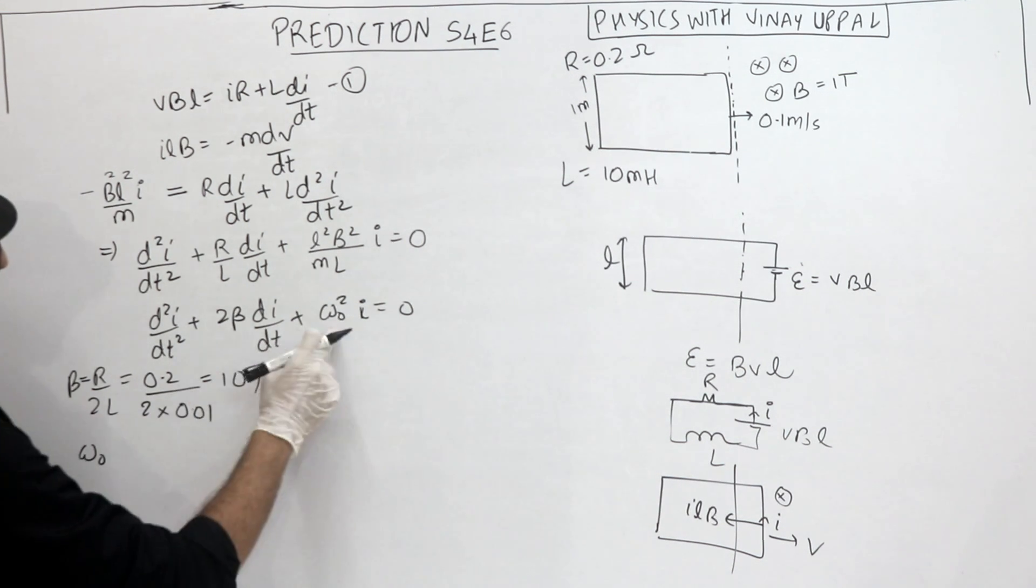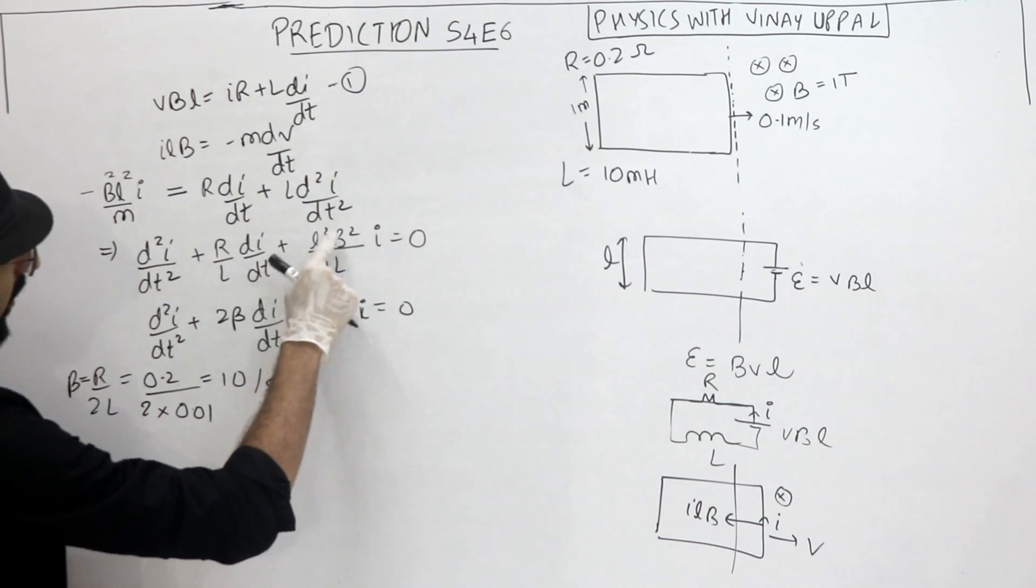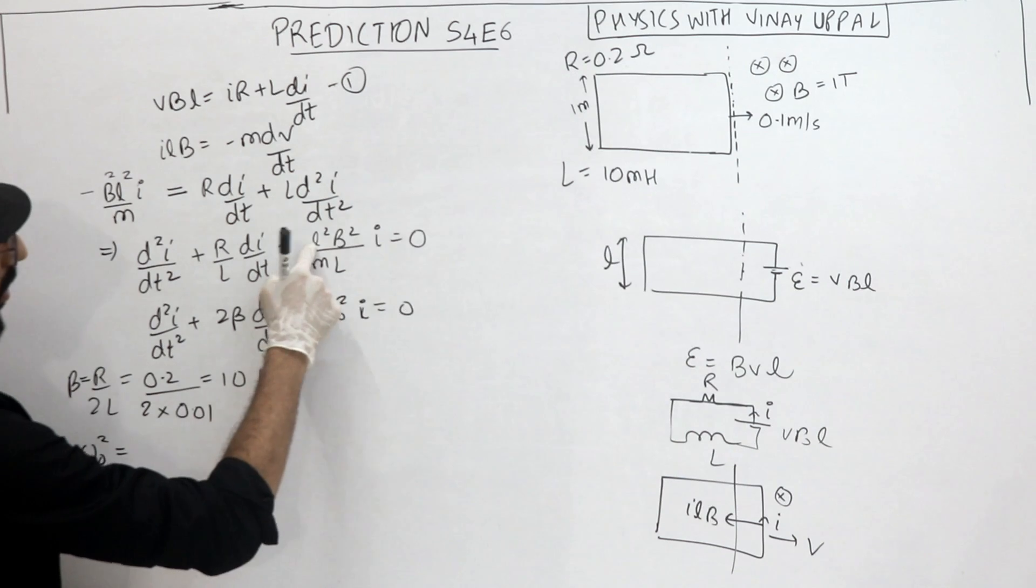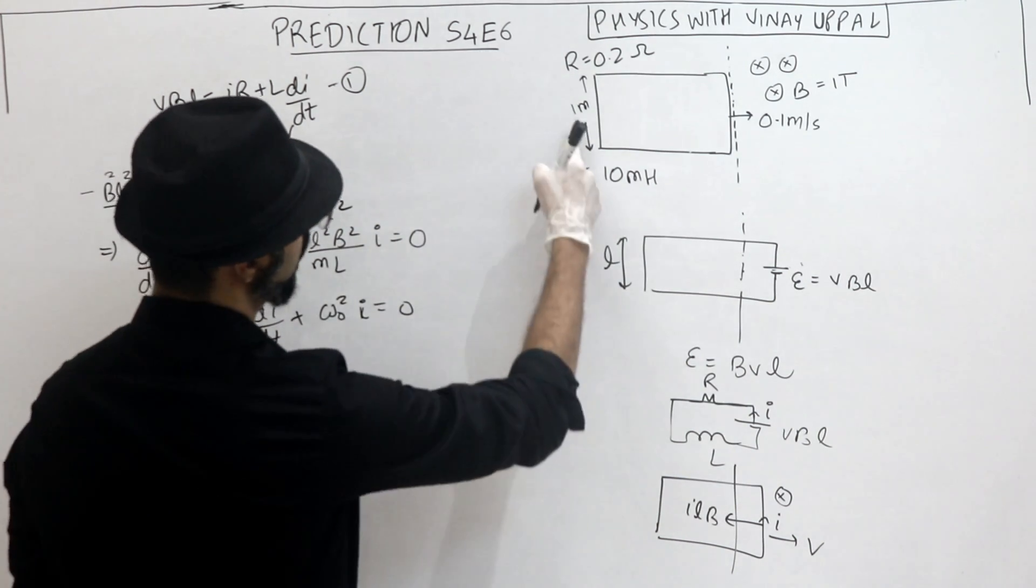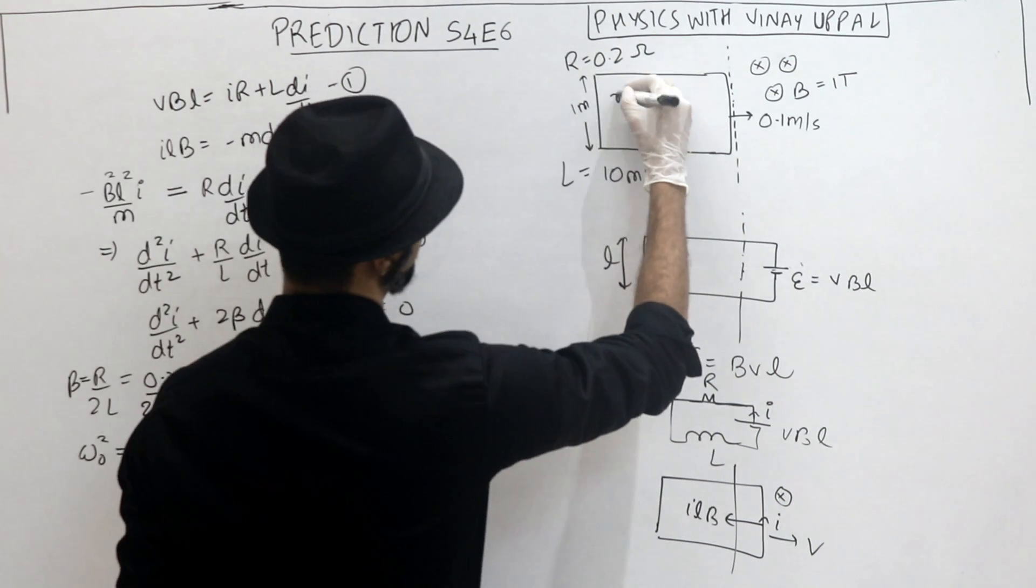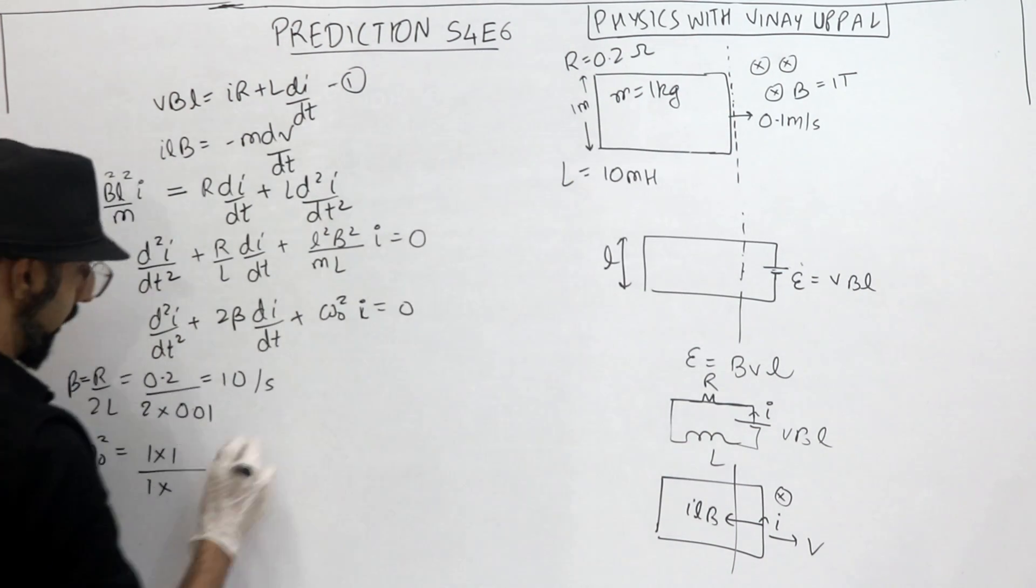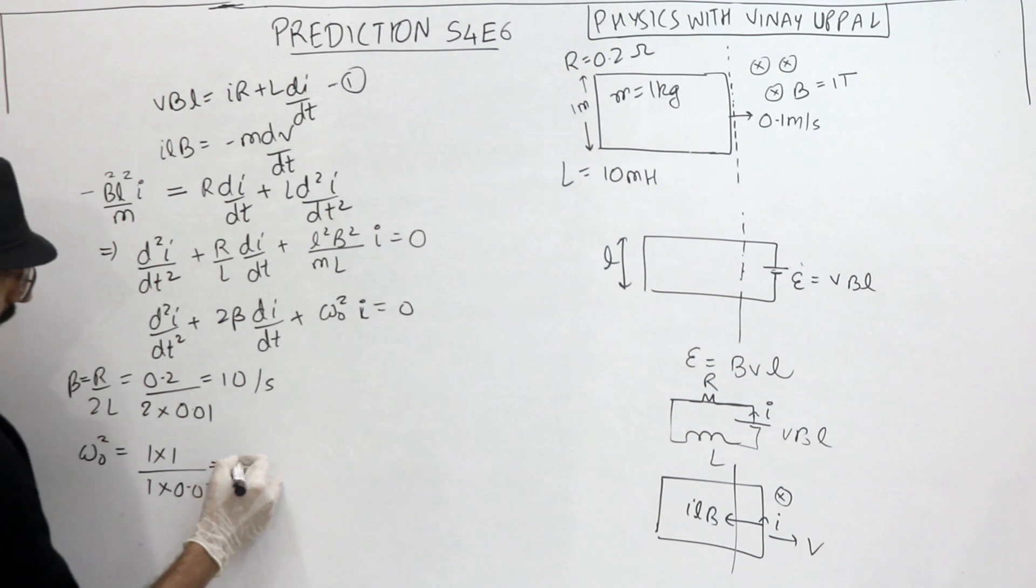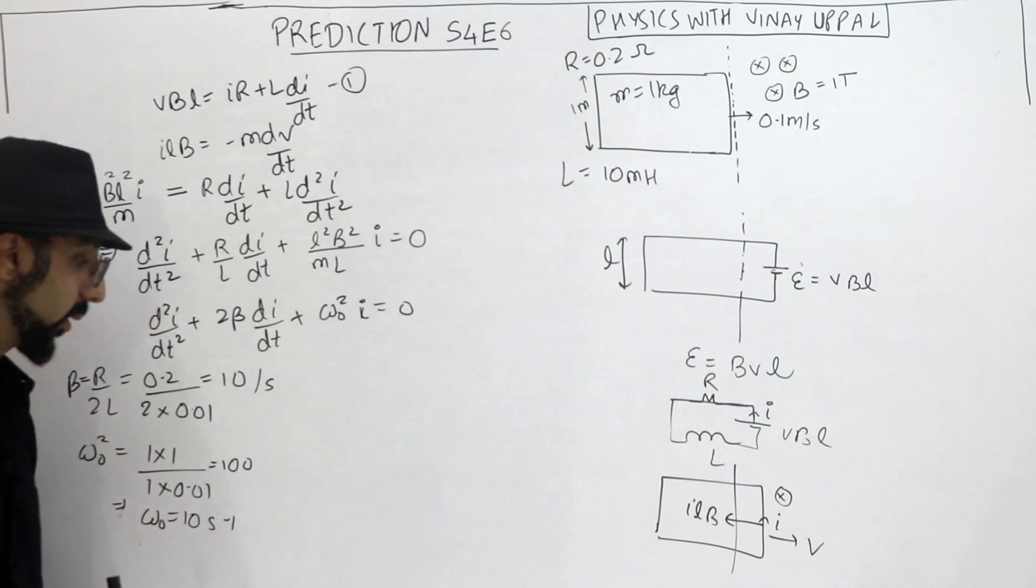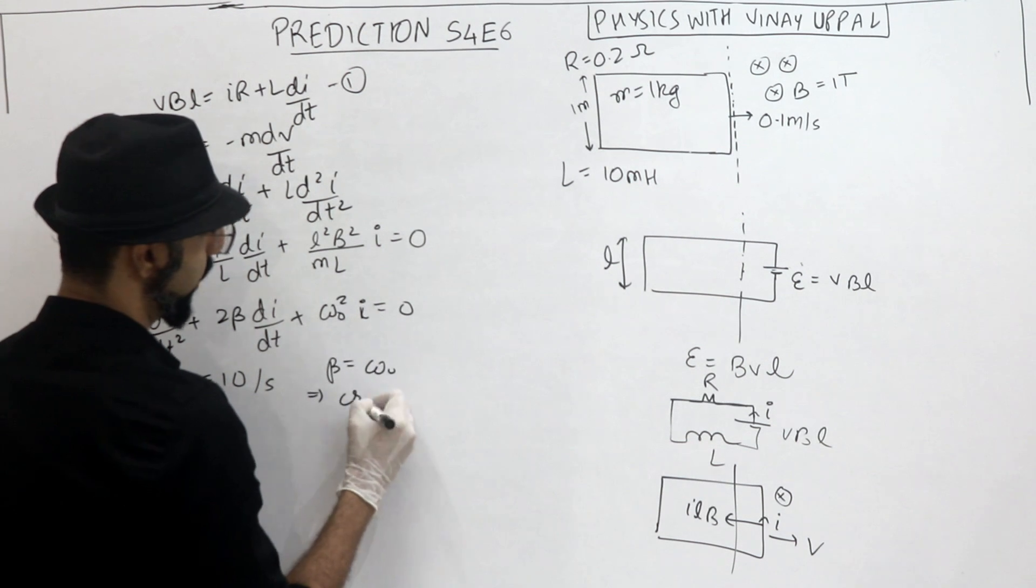Alright. Then omega naught, omega naught ka value kya tana hai? Omega naught ka value is iska square root. So omega naught square would be L square, which is L ka value 1 meter. So 1 into, this is 1 tesla, 1 square divided by mass kya tana hai? 1 kg diya tha na? So 1 kg and ye hai merah 10 millihenry. So ye 100, omega naught ka value 10 per second. So iska matlab beta and omega naught are equal. And if beta is equal to omega naught, this is our standard condition for critical damping.